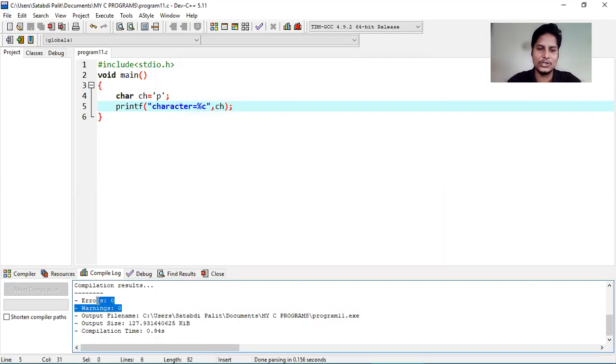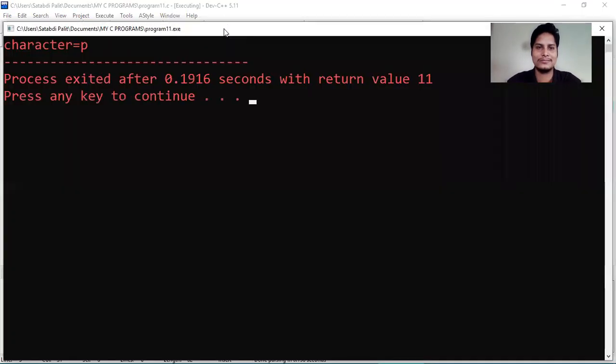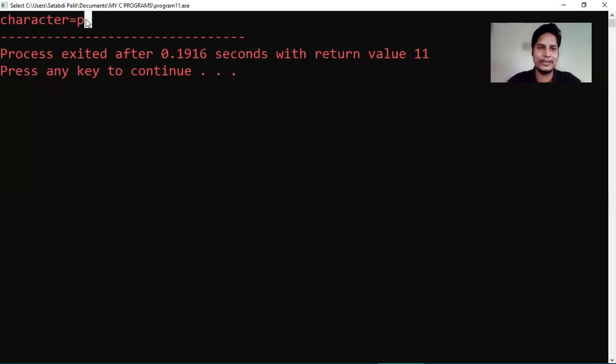Now, the errors and warnings are zero. That means my program is correct. So, now let's execute. So, you can see the character is equal to p. The character is equal to p.